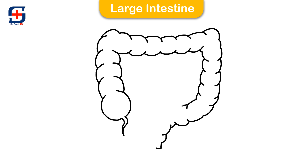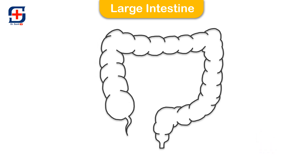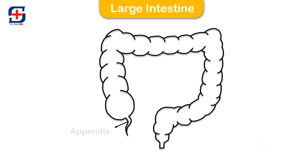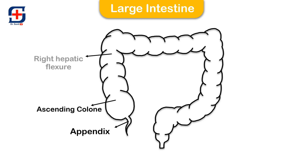The colon is the last part of the digestive system. The appendix is a part of the human digestive system. The ascending colon is the part of the colon located between the cecum and the transverse colon. Also, this is the hepatic flexure.